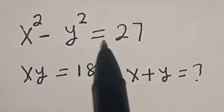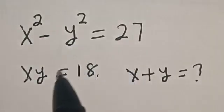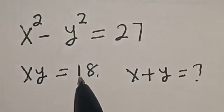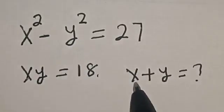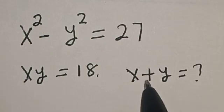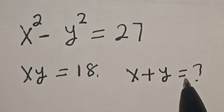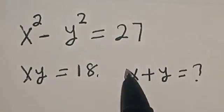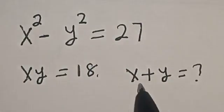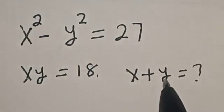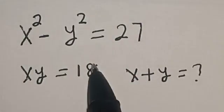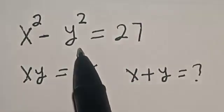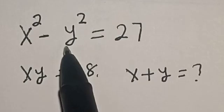x squared minus y squared is equal to 27, and xy is equal to 18. What is the value of x plus y? Hi everyone, welcome to my class. In this class, we want to find the value of x plus y from this given nice Olympiad equation.